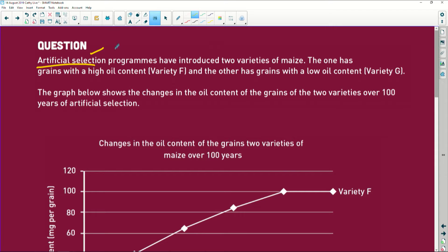Now remember, artificial selection is humans. We decide, this is us, okay, and they've introduced two varieties of maize. One has a high oil content and one has a low oil content.